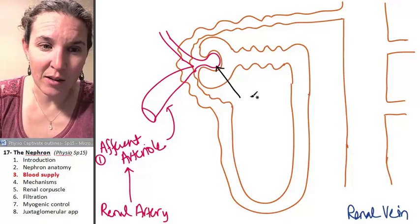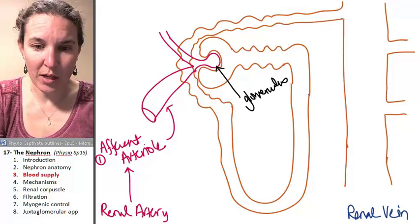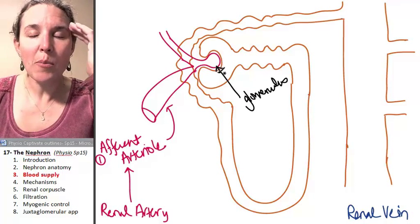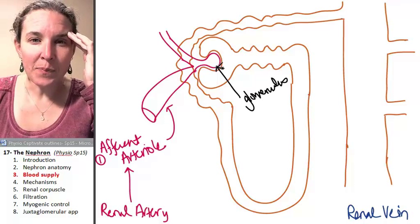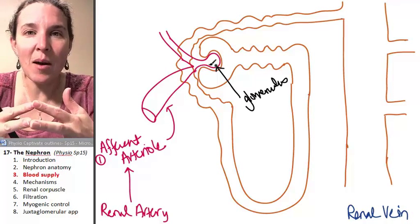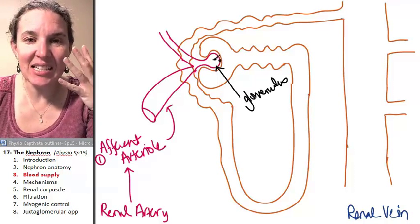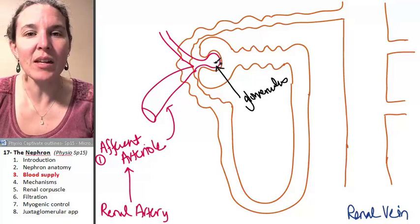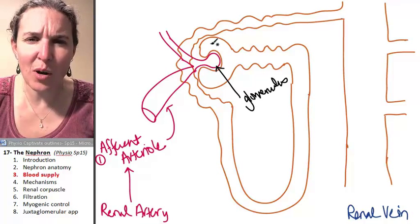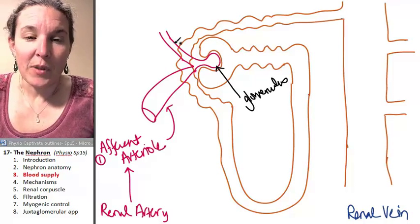That right there is my glomerulus. Think of it as a serious, hardcore tangle of capillaries — it's not a net, it's a tangle. One vessel, the afferent arteriole, feeds into this tangle of capillaries. Notice the proximity of this capillary net to Bowman's capsule, or the renal corpuscle — the glomerular capsule.